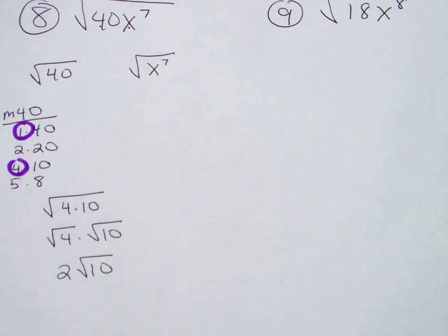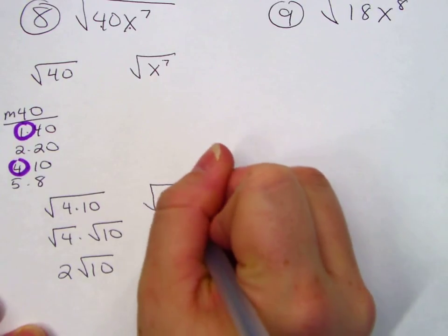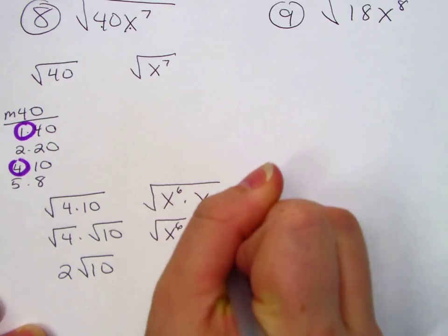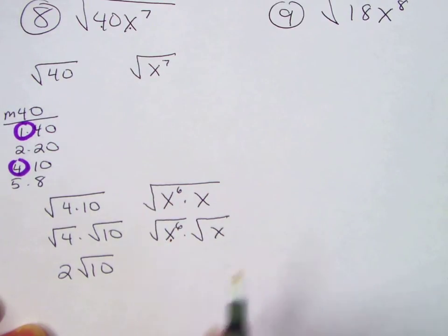Now I'm going to do x to the 7th. What do you do when it's odd? Make it even. Times x. x6. Radical x. What's the rule? Divide by 2.